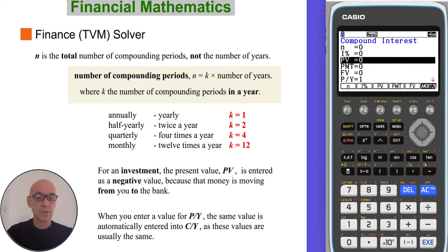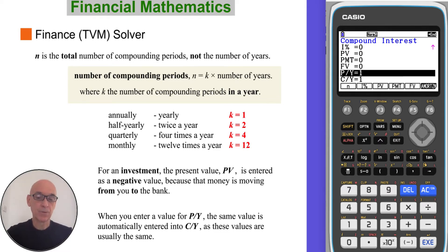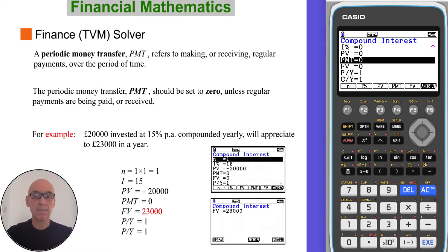For an investment, the present value PV is entered as a negative value because that money is moving away from you into the bank, for example. When you enter a value for P/Y, the number of payments per year, the same value is automatically entered into C/Y, the number of compounding periods per year, as these values are usually the same. The periodic money transfer PMT refers to making or receiving regular payments over the period of time, and should be set to zero unless regular payments are being paid or received.